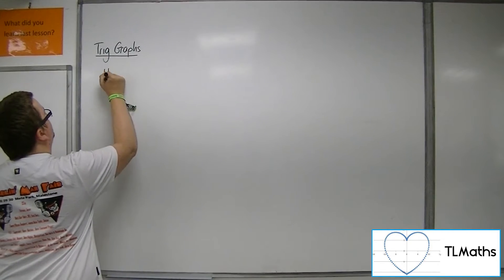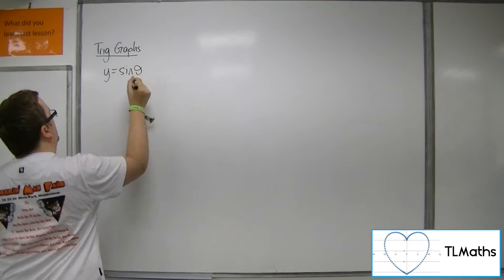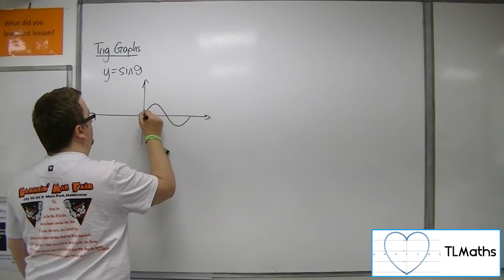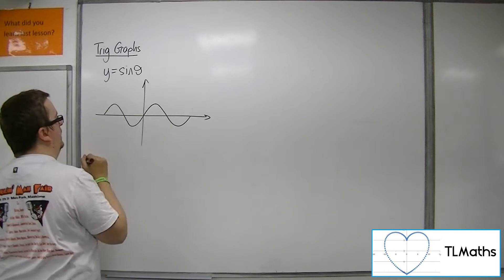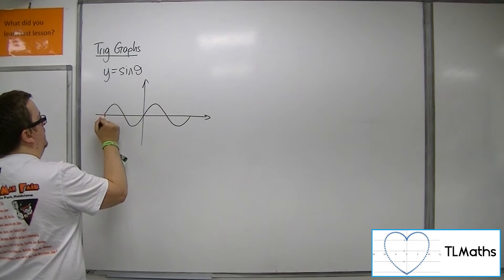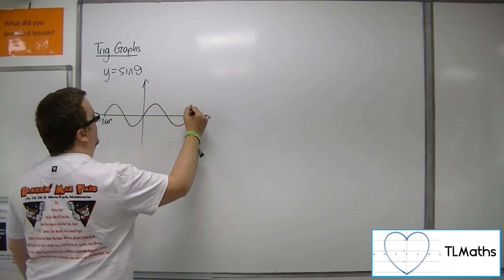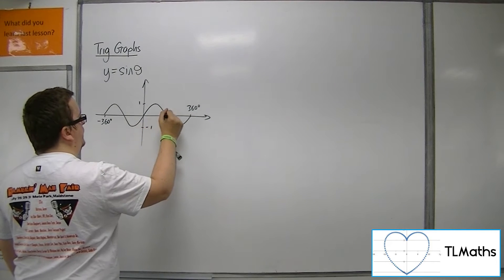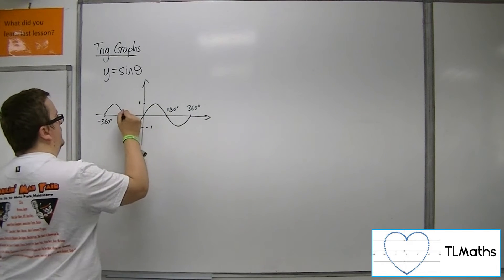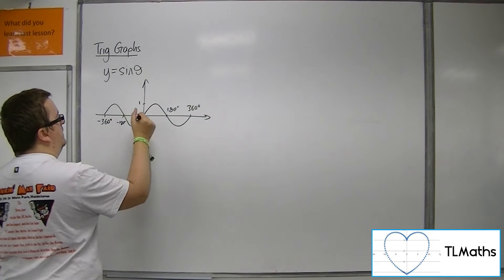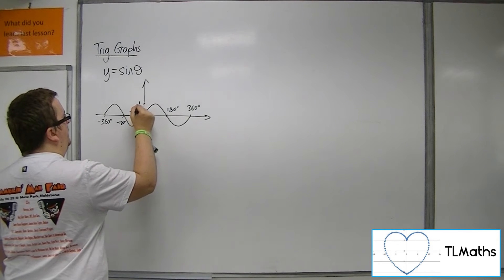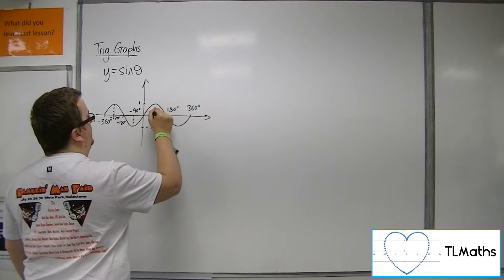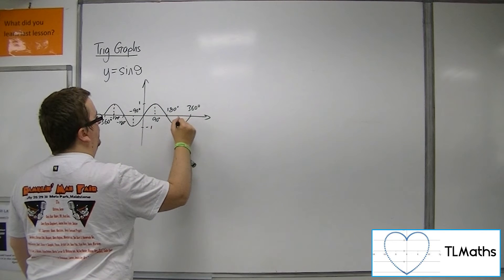For sine, the curve looks like this, between minus 360 and 360 degrees. There's 180, minus 180, minus 90, minus 270, 90, and 270.